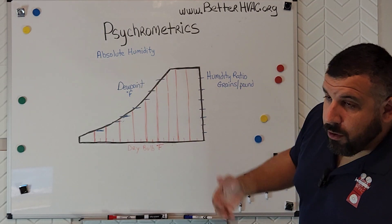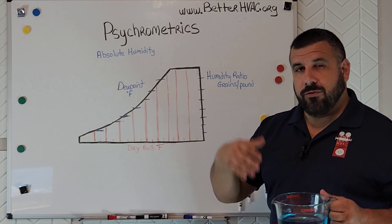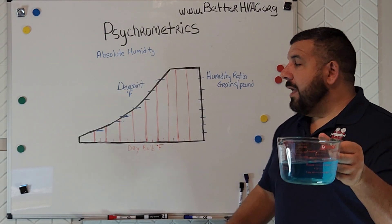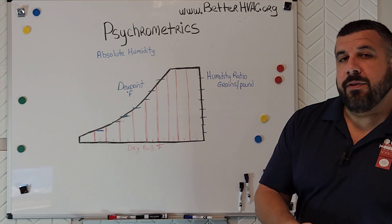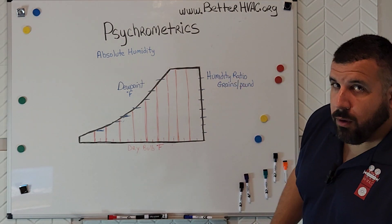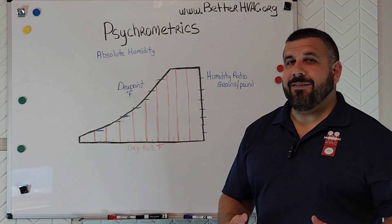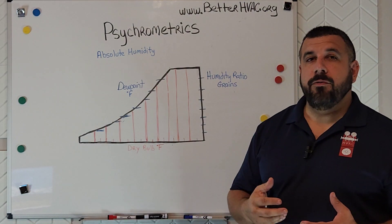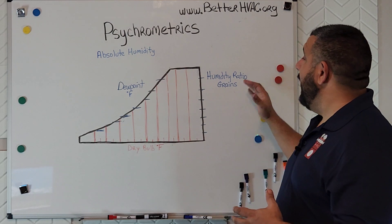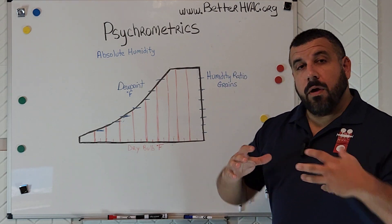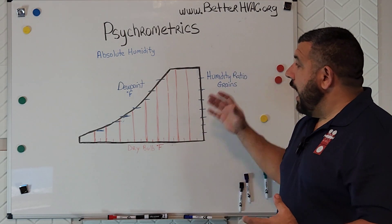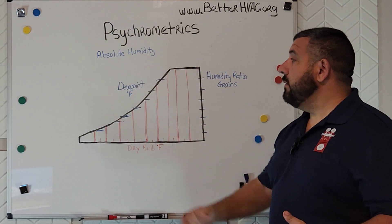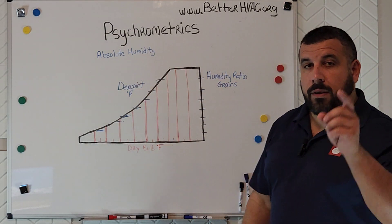Now, I've never heard of a grain of moisture — and just to put it in a little bit of context, this is a pint of water, and there are 7,000 grains in a pint of water. If that still doesn't make a lot of sense to you, you're not alone. There are only one or two formulas in psychrometrics where we really have to worry about grains. When we're talking about moisture in the air, I want you to be thinking about dew point — when you're thinking about how humid it is, think about it in terms of dew point.